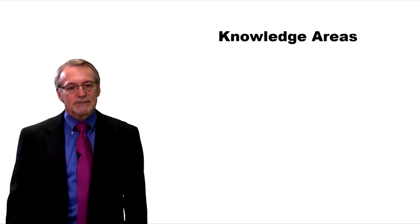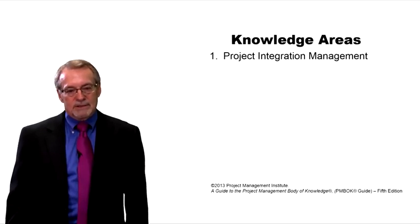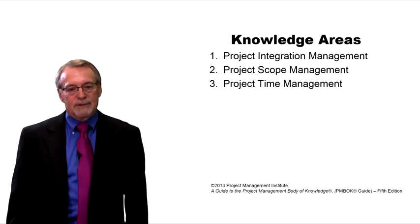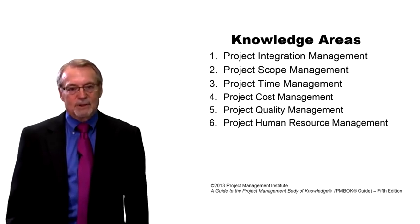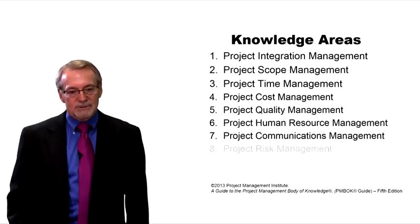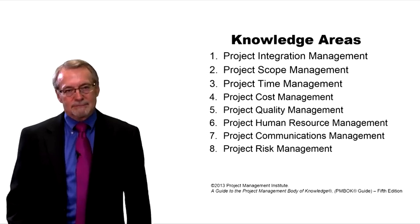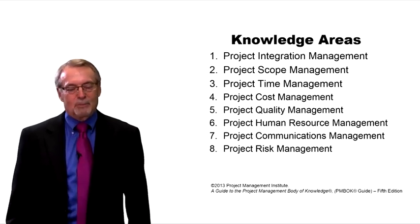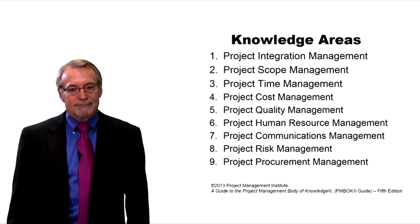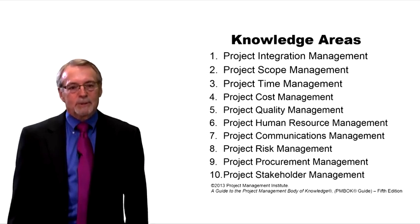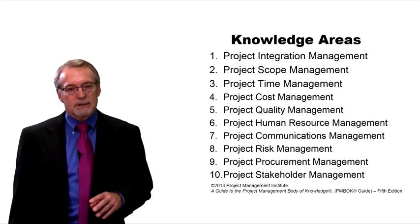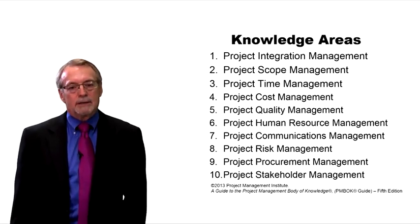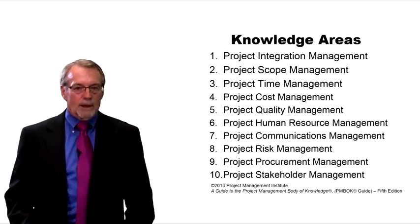There are also ten knowledge areas that PMI lays out for project managers. These include scope, time, cost, and quality — which start to look like the triangle we discussed. Also human resources, communication, risk, procurement, and stakeholder management. The first knowledge area is integration, which means you can't work on one knowledge area without affecting another — all nine other knowledge areas are integrated together into one whole knowledge base for doing a project.